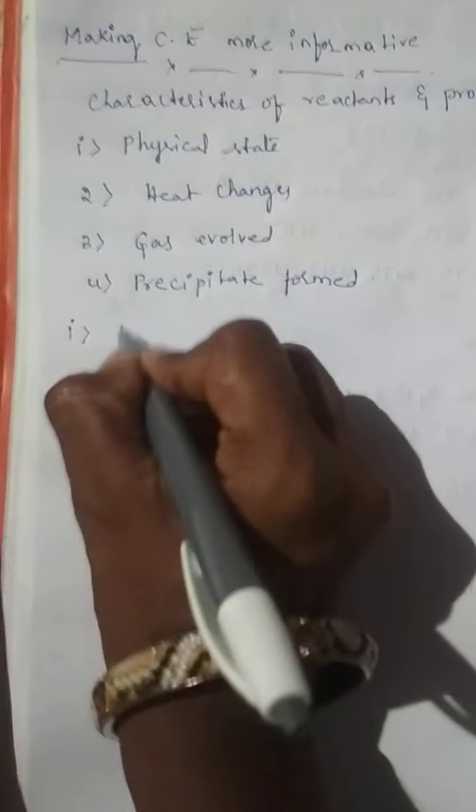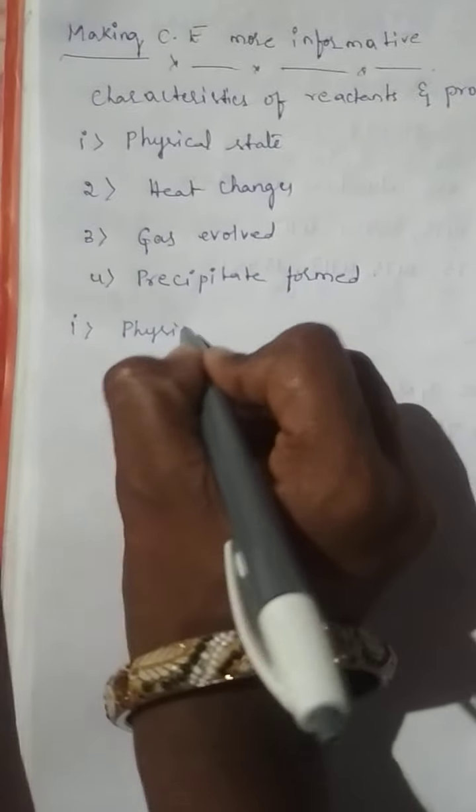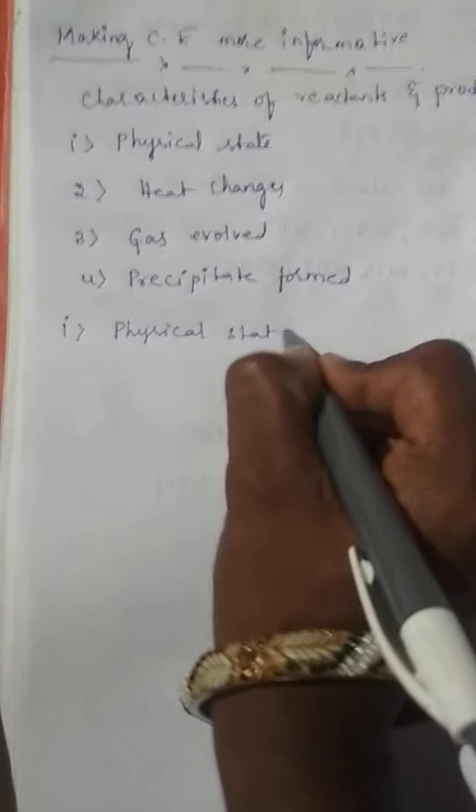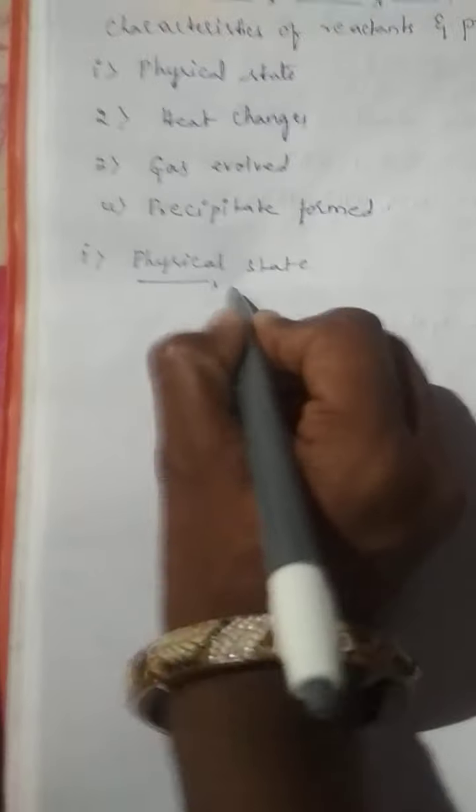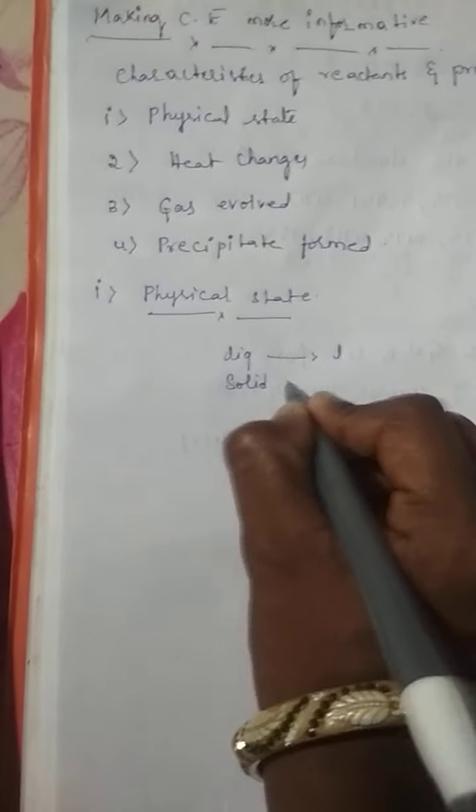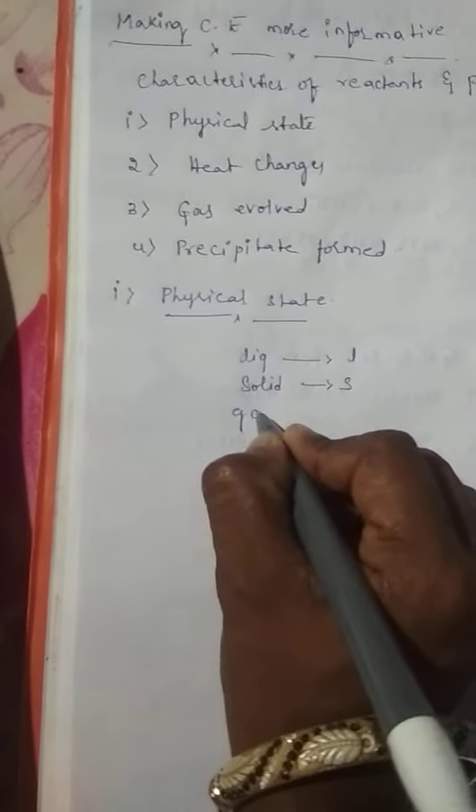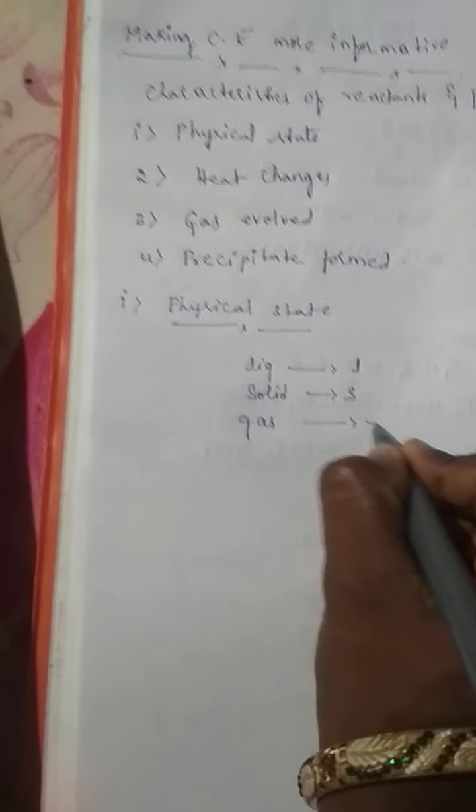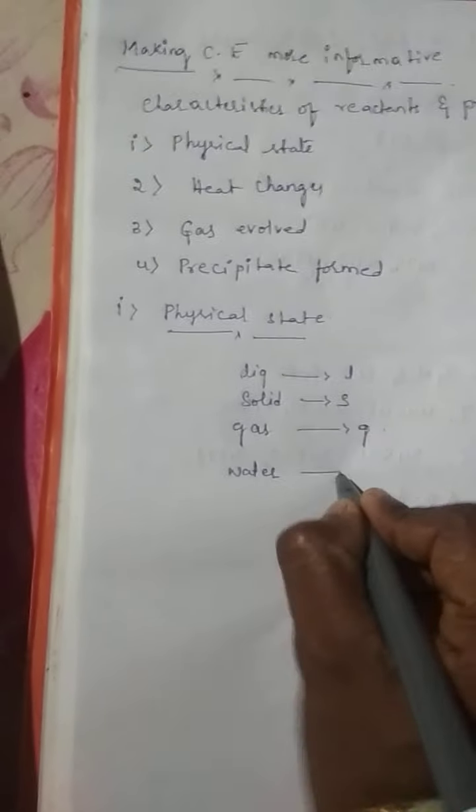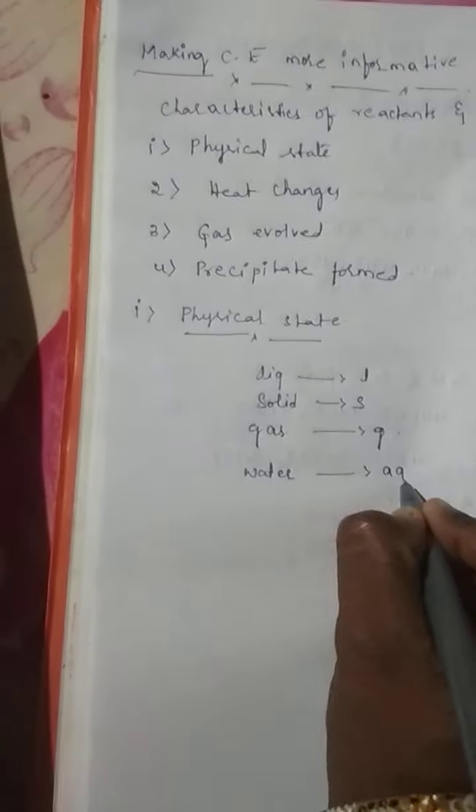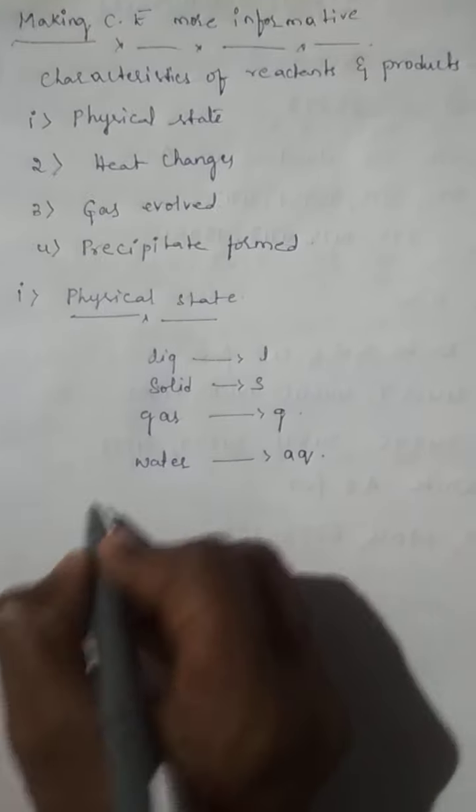We will express one by one. First one, physical state. To make the chemical reaction more informative, the physical states of the substance be mentioned like: liquids are represented by L, solids are represented by S, gases are represented by G, and water, the word aqueous, is represented by AQ. We will discuss with one example.